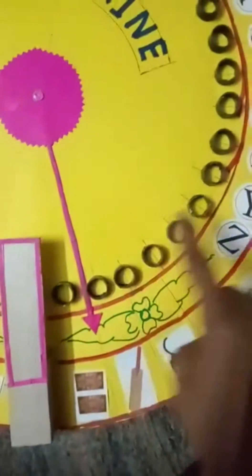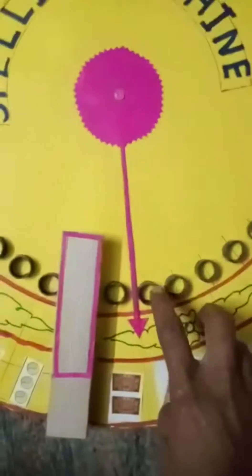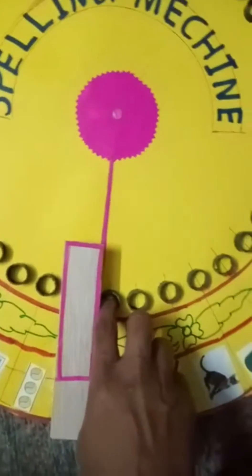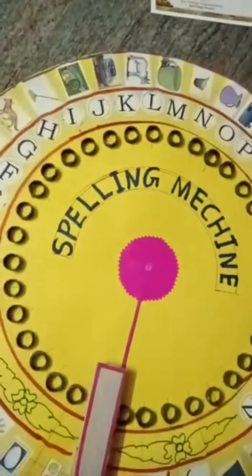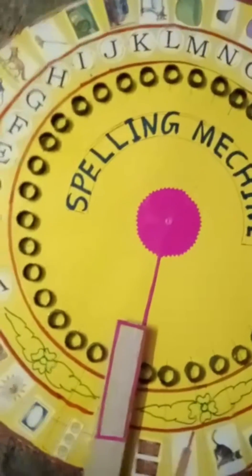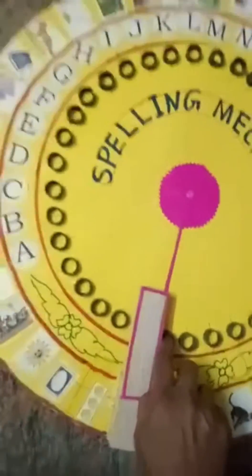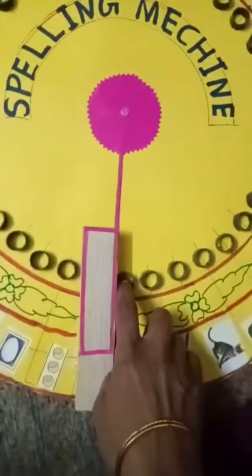Only if the spelling is correct. We need to dial the spelling of the word in a clockwise direction like an olden days phone. For example, let's take man. That spelling has to be dialed by the kid.